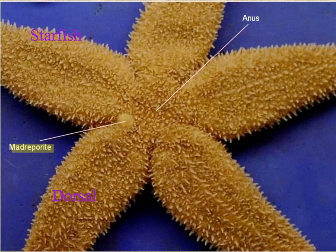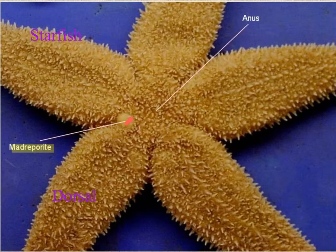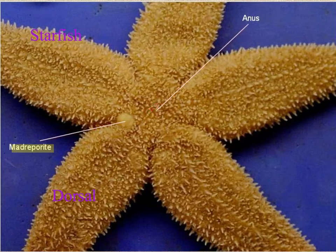Here we have the starfish, and we're looking at the dorsal or the back. We can see the five rays. Here we have the madreporite, which is the opening to the water vascular system. We see the individual spines, and the anus is located right here.